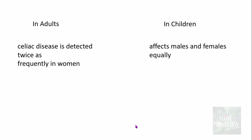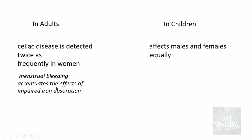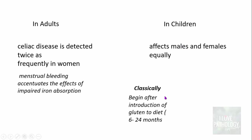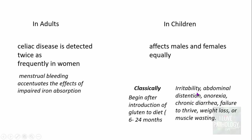There are differences between adult and childhood manifestations. In adults, celiac disease is detected twice as frequently in women, because menstrual bleeding accentuates impaired iron absorption. In children, it affects males and females equally, with symptoms typically beginning after the introduction of gluten to the diet, usually around 6 to 24 months. Children present with irritability, abdominal distension, anorexia, chronic diarrhea, failure to thrive, weight loss, and even muscle wasting.